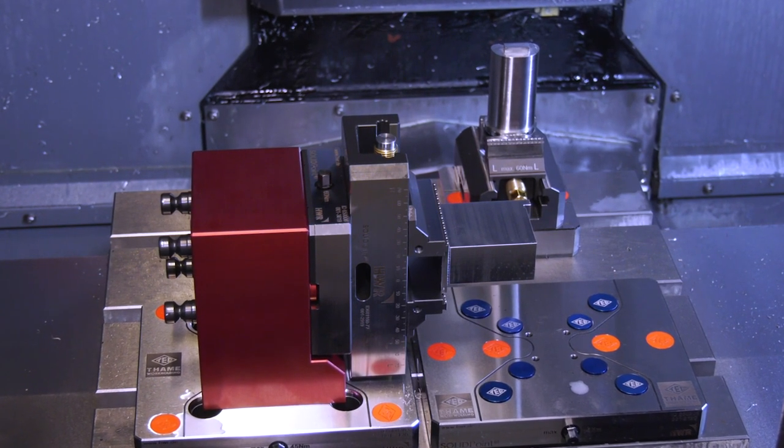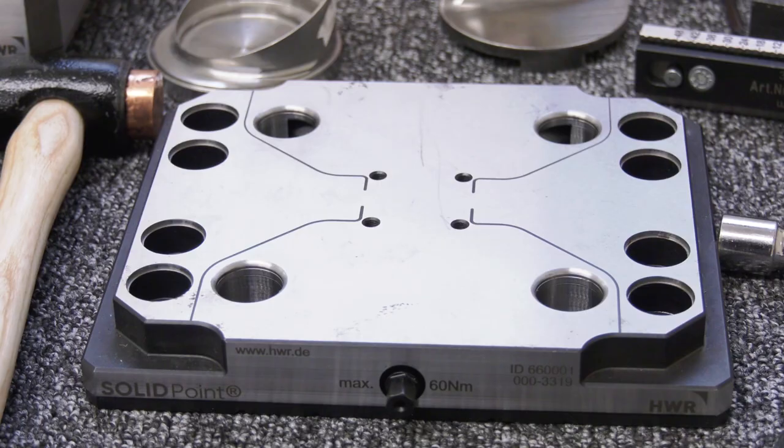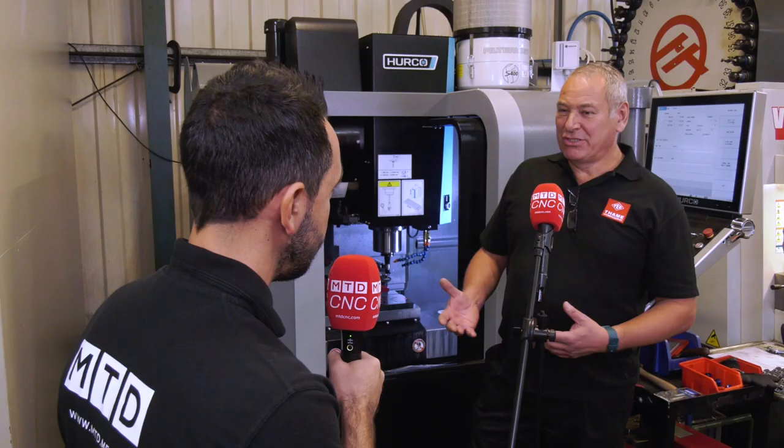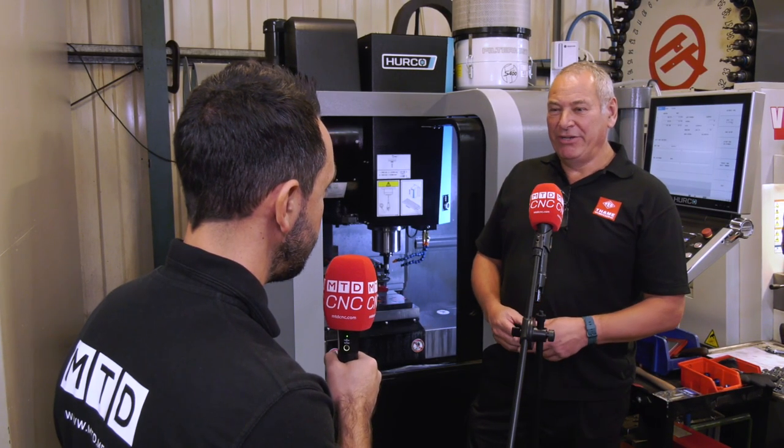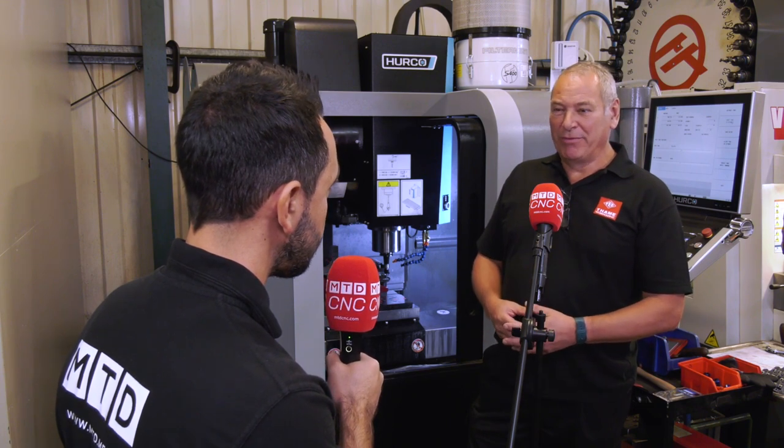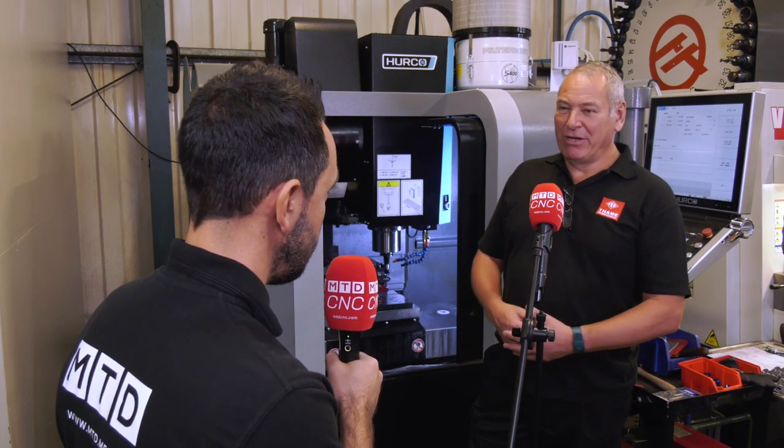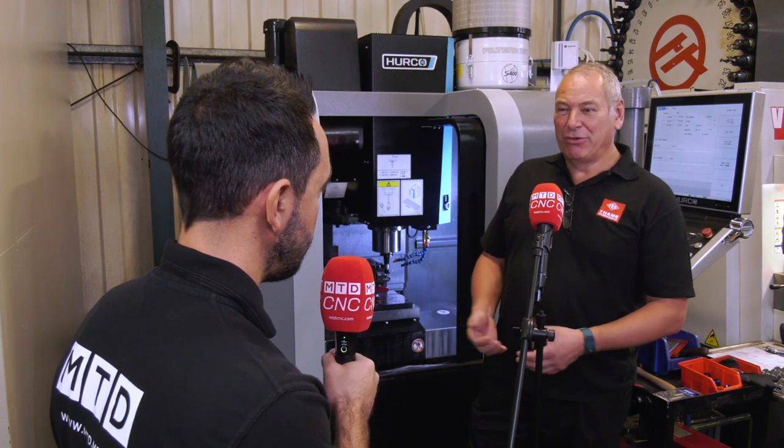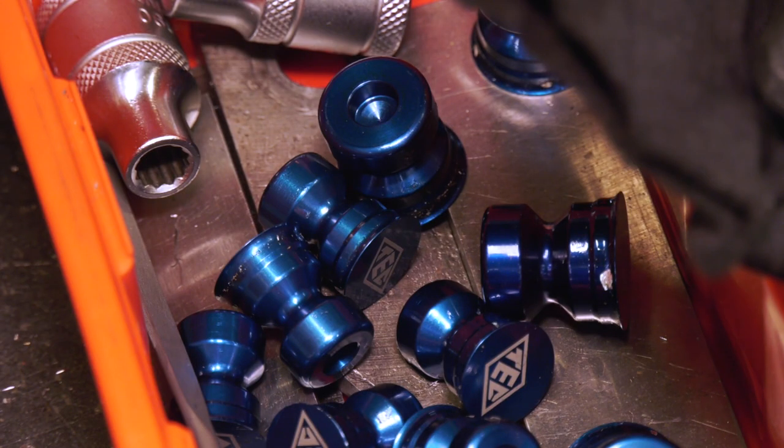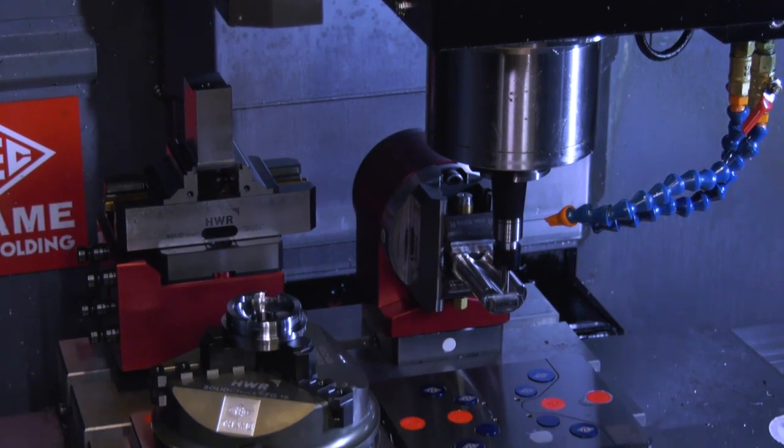What if you wanted to load a component directly onto a zero point plate? If you have a large or difficult component to machine, you can put the zero point studs in the bottom of the component and it will go straight onto the plate. You could either be left with the tapped holes in the bottom of the part, which sometimes doesn't matter, or just leave a certain amount to machine off to remove those holes afterwards.